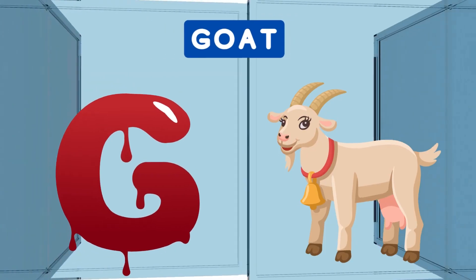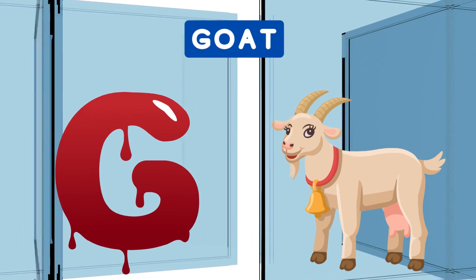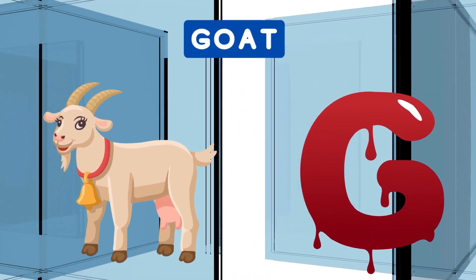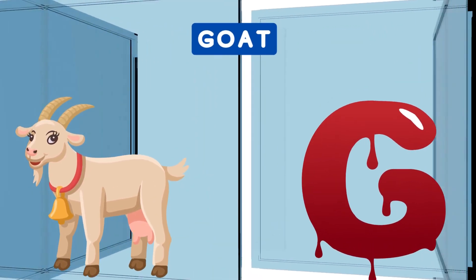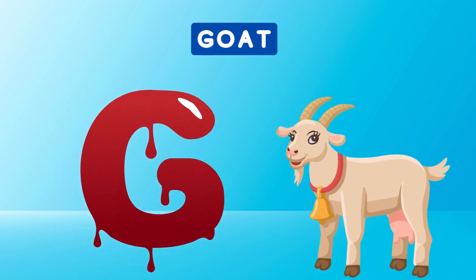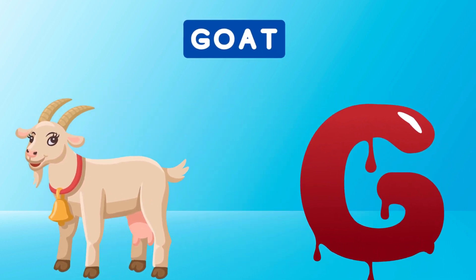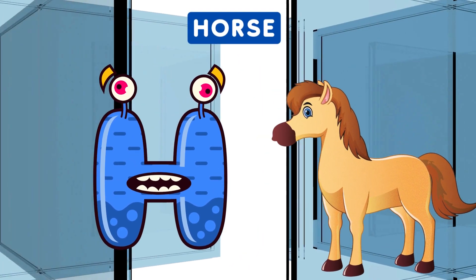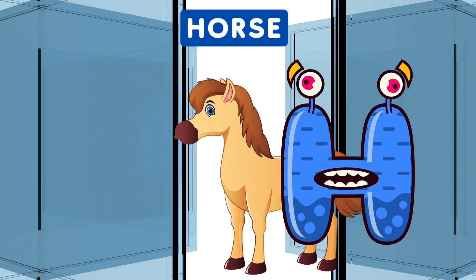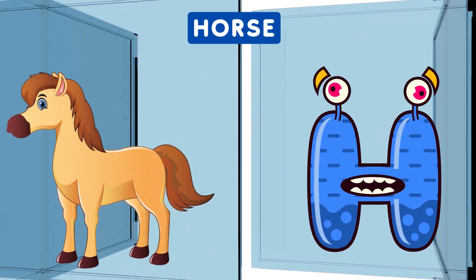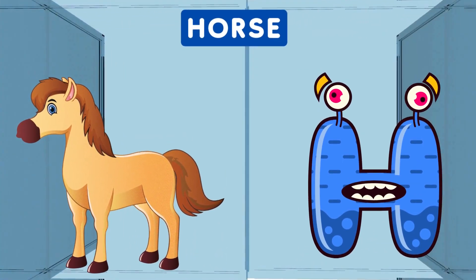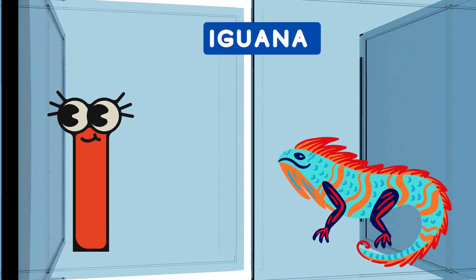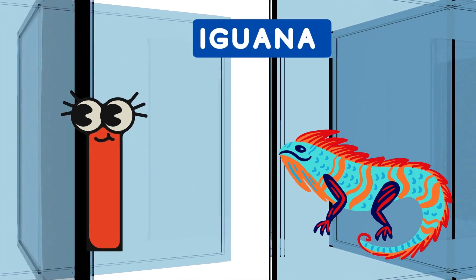G is for Goat. G, G, Goat. G, G, Goat. G, Goat. H is for Horse. H, H, Horse. H, H, Horse. H, Horse.